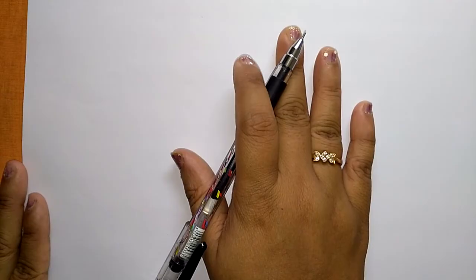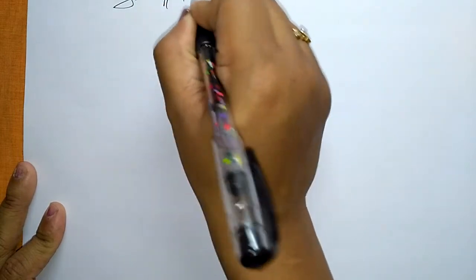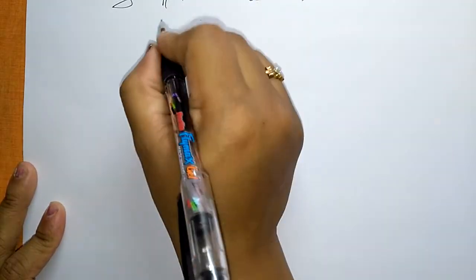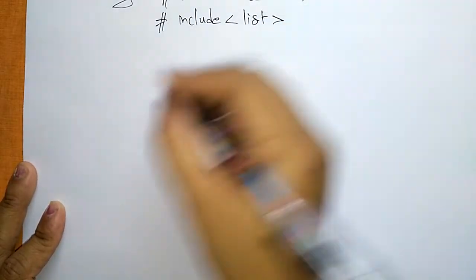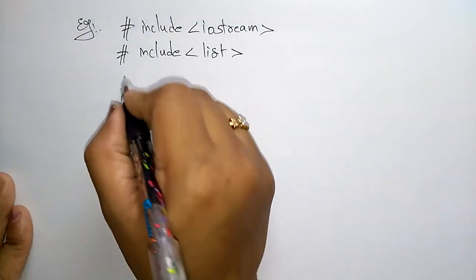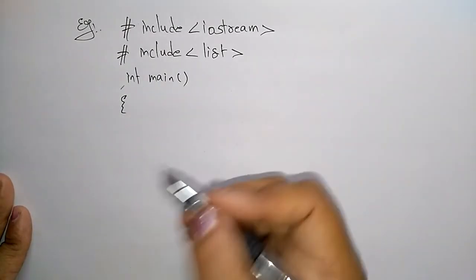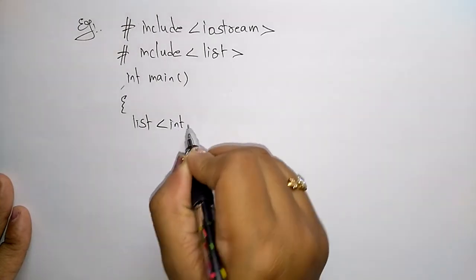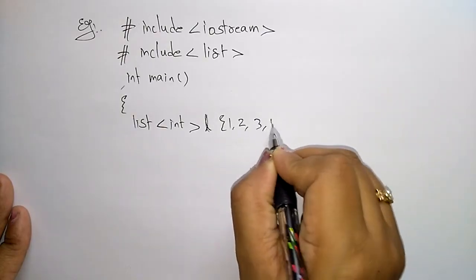Let's write the reverse program. Include iostream and the list library. In the main function, create a list: list<int> l = {1, 2, 3, 4, 5}. These are the values that need to be reversed.